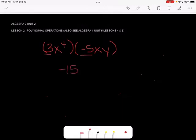And then for my variables, I've got x to the 4th times x, which there's an x. It's really x to the 1st. When I multiply these, I keep the x and I add my exponents. So I get 5. And I also have a y there, so I'm just going to rewrite the y, because I didn't have anything to combine it with. So we just get negative 15x to the 5th y.